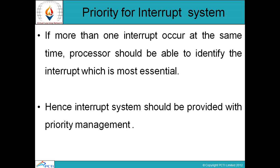Now, priority of interrupt system. If more than one interrupt occurs at the same time, the processor should be able to identify the interrupt which is most essential. Priority का मतलब है कि पहले हम क्या perform करना है, उसके बाद क्या perform करना है। हम एक value set कर देते हैं और उस value के according हम अपने tasks perform करते हैं। इसी तरह microprocessor में भी अगर एक साथ एक से ज़्यादा interrupt occur हो जाते हैं तो हम उनको priority के according identify और execute करते हैं।